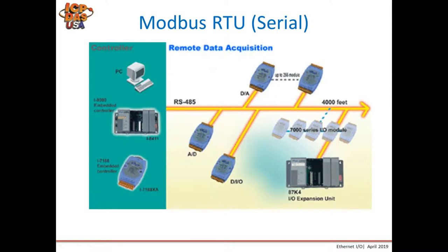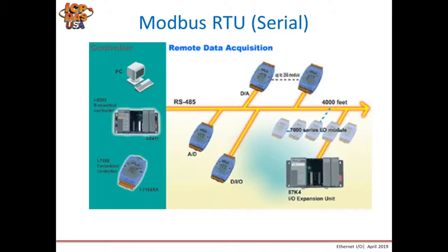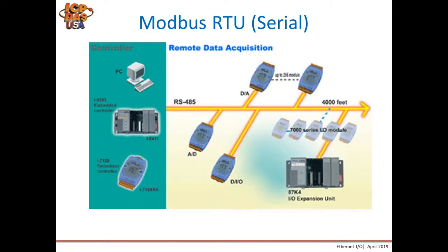Here's a typical schematic for a system using Modbus RTU. You have a serial master — note you can only have one master at a time talking to many RS-485 devices along a single RS-485 bus, up to 4,000 feet.